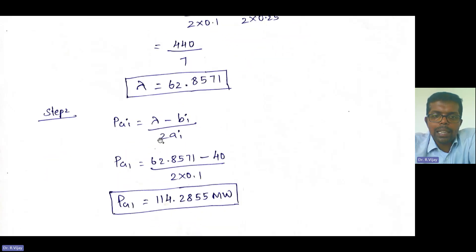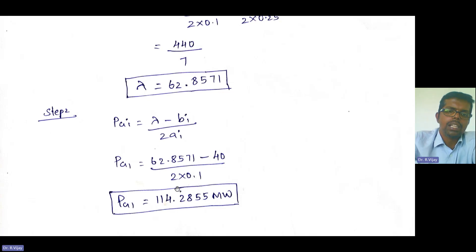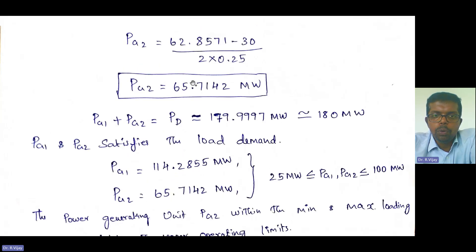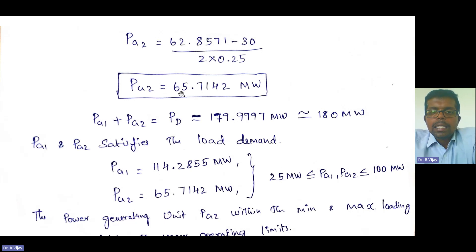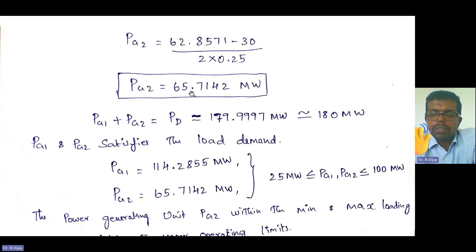Next, step two: calculate PGi. PGi is equal to lambda minus Bi divided by 2Ai. Substituting values, PG1 = 62.8571 minus B1 divided by 2A1, giving PG1 as 114.2855 megawatt. Similarly, PG2 = lambda minus B2 divided by 2A2, giving PG2 as 65.7142 megawatt. PG1 plus PG2 equals approximately 180 megawatt, so demand is satisfied.